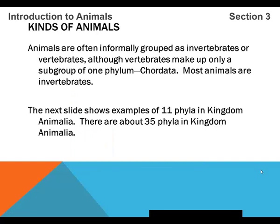Kinds of animals. Animals are often informally grouped into invertebrate groups or vertebrate groups. Vertebrates only make up a small portion of all of the animals on the planet. Vertebrates — the chordates — belong to the phylum Chordata, which is the only group of vertebrates. The vast majority of animals that we come in contact with on a day-to-day basis are invertebrates — and typically we squish those invertebrates. The next slide will show examples of 11 phyla in the Kingdom Animalia; there are about 35 total phyla.